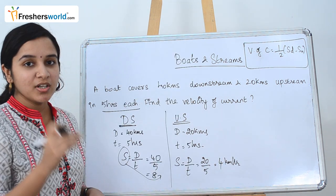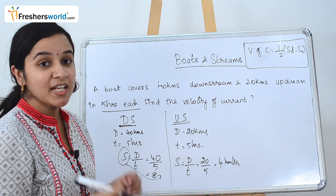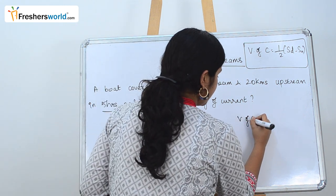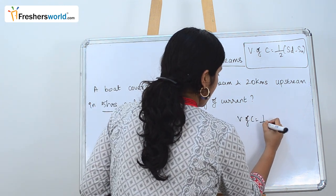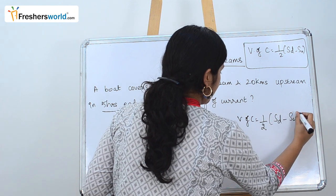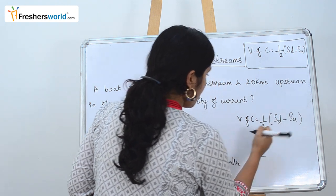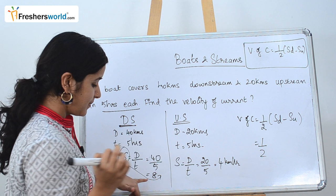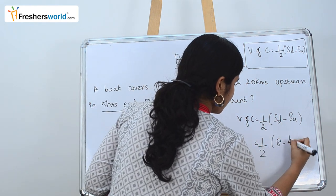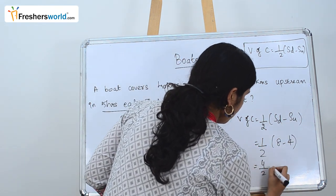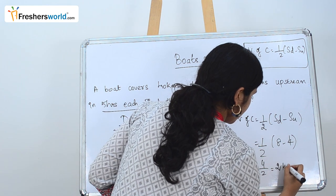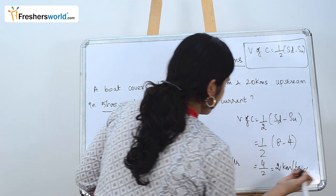We know the downstream speed and the upstream speed, so let's substitute in the formula. Velocity of current equals half into (downstream speed minus upstream speed), which is half into (8 minus 4) = 4 by 2, so the velocity of the current is 2 kilometers per hour.